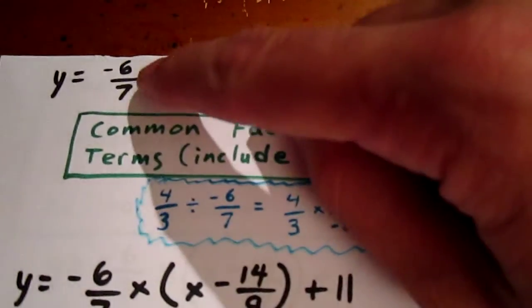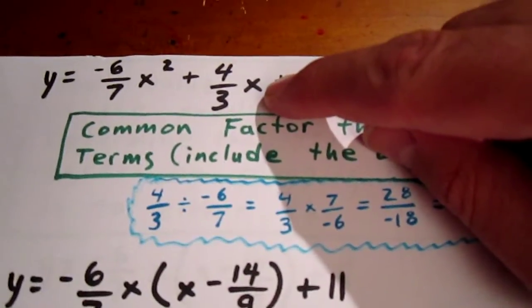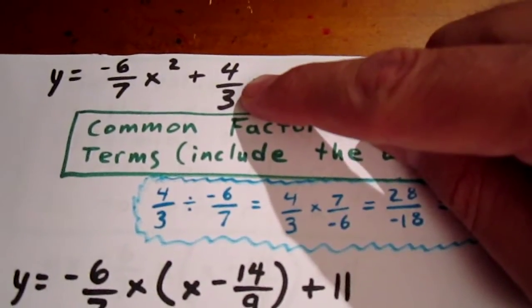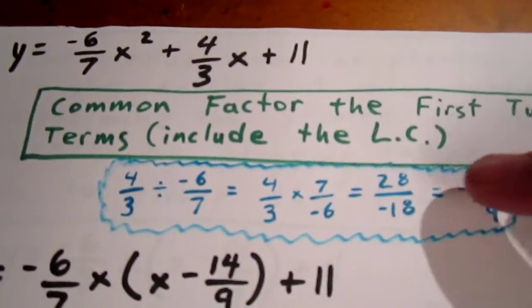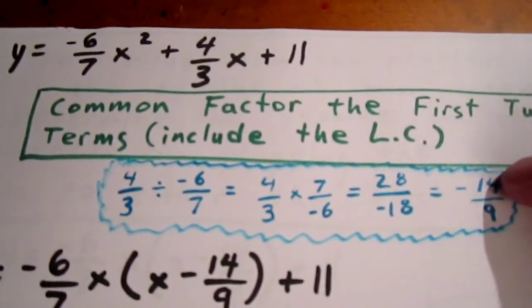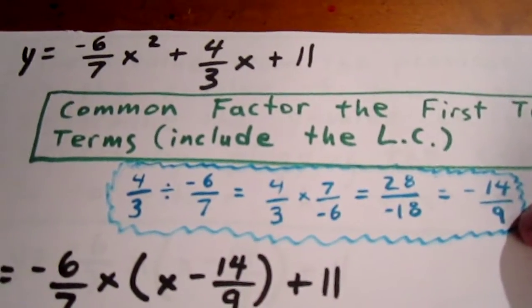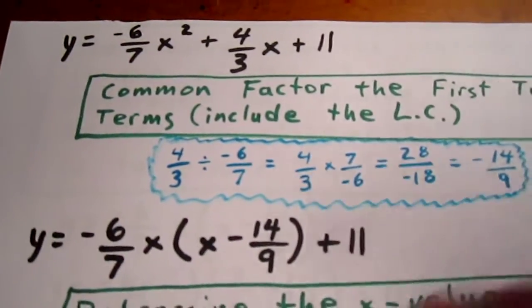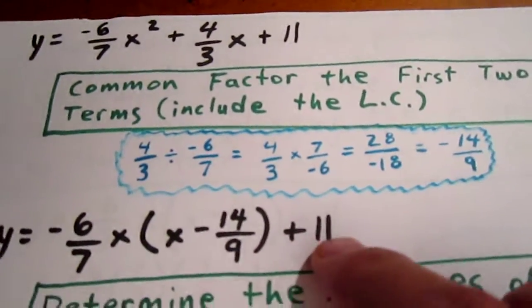So factoring out negative 6 7ths x from 4 3rds x requires us to divide 4 3rds divided by negative 6 over 7. We invert and multiply, we get 28 over negative 18, which is equal to negative 14 over 9. So what we now have is negative 6 7ths x times x minus 14 over 9 plus 11.